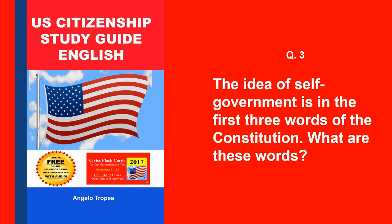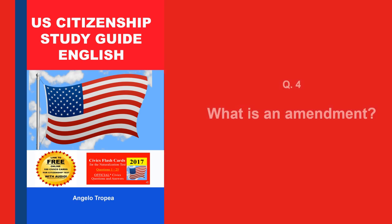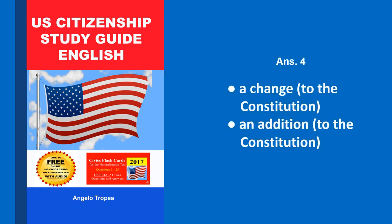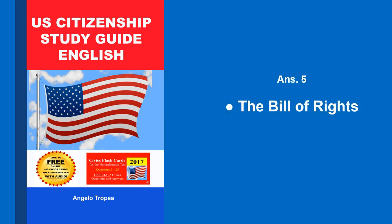The idea of self-government is in the first three words of the Constitution. What are these words? We the people. What is an amendment? A change to the Constitution and addition to the Constitution. What do we call the first ten amendments to the Constitution? The Bill of Rights.